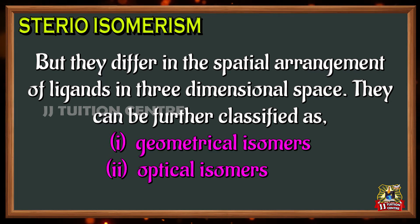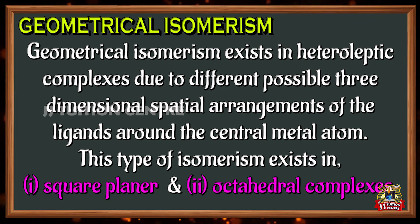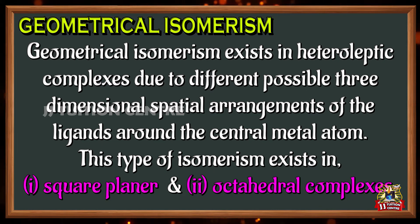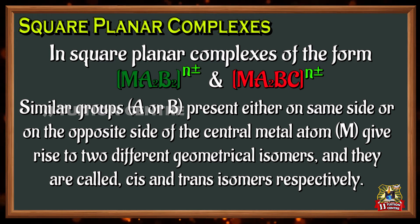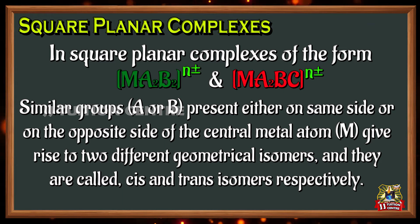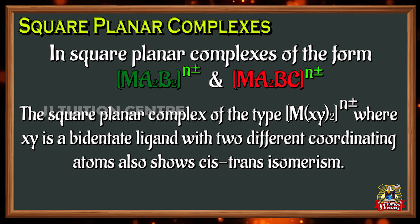They can be further classified as geometrical isomers and optical isomers. Geometrical isomers exist in heteroleptic complexes due to different possible three-dimensional spatial arrangements of the ligands around the central metal atom. This type of isomerism exists in square planar and octahedral complexes. In square planar complexes of the form MA₂B₂ and MA₂BC, where A, B and C are monodentate ligands and M is the central metal ion, similar groups present either on the same side or opposite side of the central metal atom give rise to two different geometrical isomers called cis and trans isomers respectively.